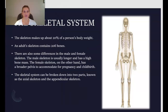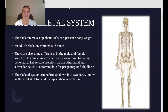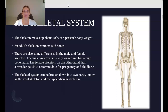We are going to begin by talking about the skeletal system. The skeleton makes up about 20% of a person's entire body weight, and an adult's skeleton contains 206 bones. There are definite differences between the male and female skeleton: the male skeleton is usually longer and has higher bone density, while the female skeleton has a broader pelvis to accommodate pregnancy and childbirth. The skeletal system is further broken down into the axial skeleton and the appendicular skeleton.